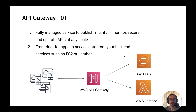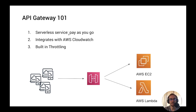Let's focus for a second on the pricing. It's the typical serverless service pricing — you pay as you go. You pay for the number of requests. If you have a free tier on your AWS account, you'll get some millions of requests per month for free. The API Gateway also integrates natively with AWS CloudWatch, so you can get all the logs inside CloudWatch. It also has built-in throttling, so if you want to throttle requests based on an API key or a path, you can do that natively.